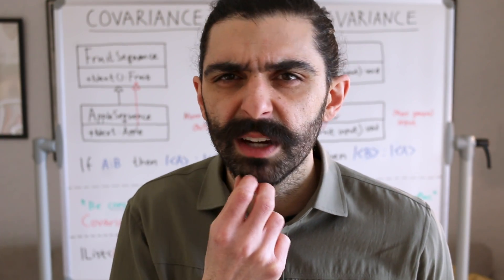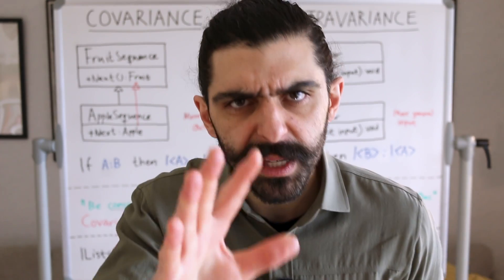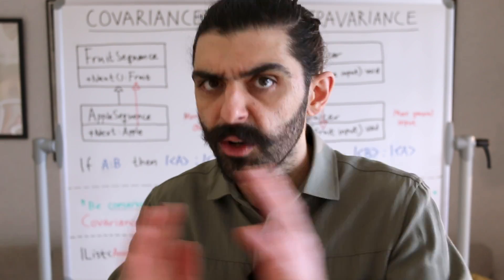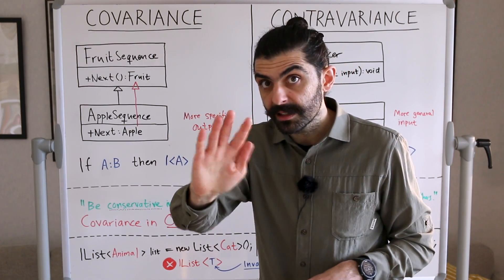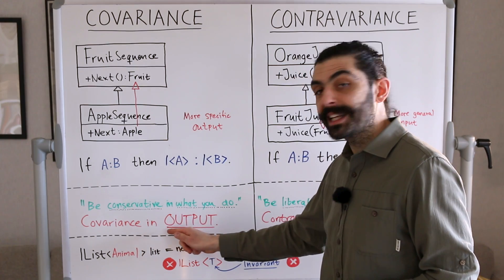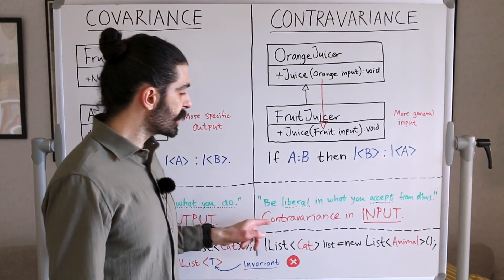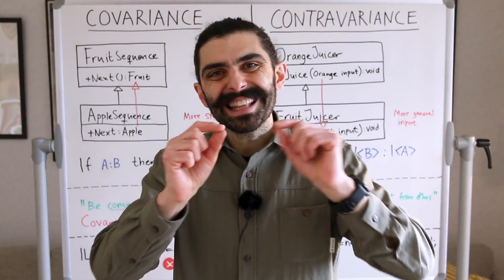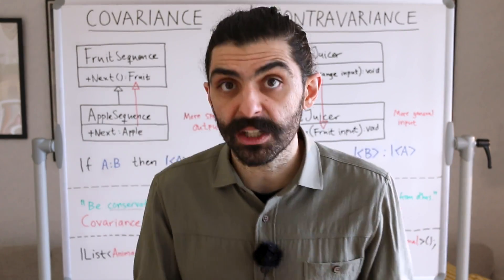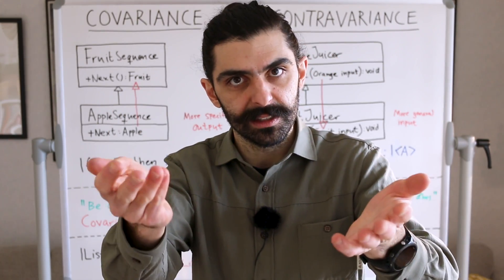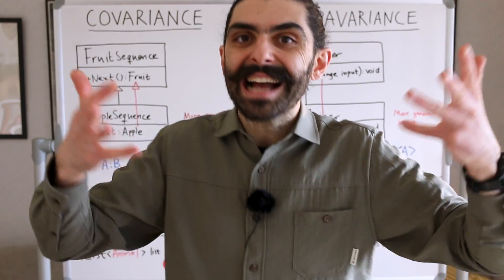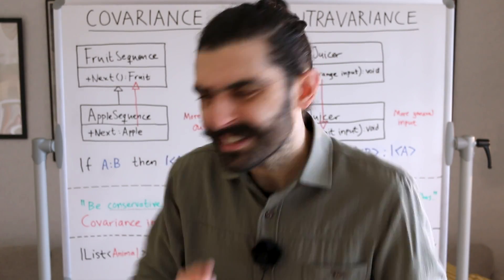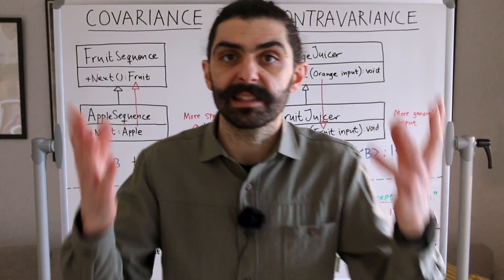So can you always use covariance and contravariance? No, not if you want to maintain type safety. The generic type list is usually invariant in the type parameter — neither covariant nor contravariant. Why? Because covariance is only safe in output, while contravariance is only safe in input. A list of type T both takes objects of type T as input when you add items, and produces items of type T as output when you read them. Because it's both taking T as input and producing it as output, it cannot be covariant nor contravariant — it must be invariant.